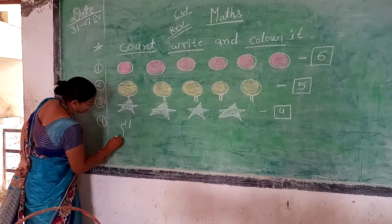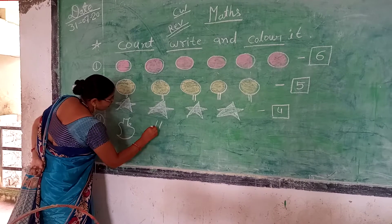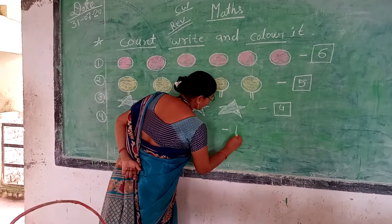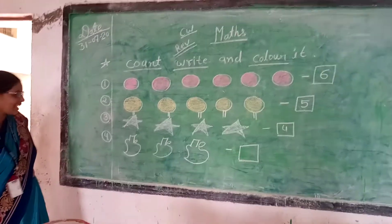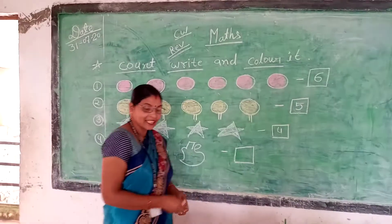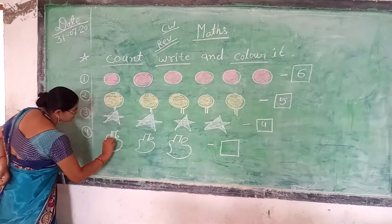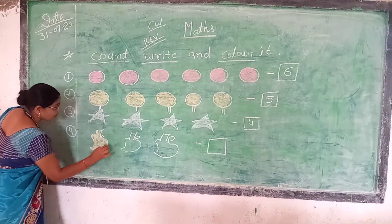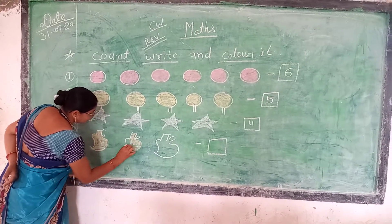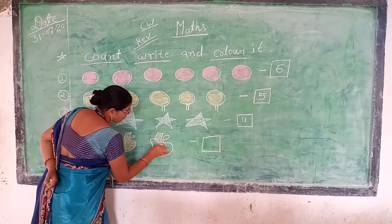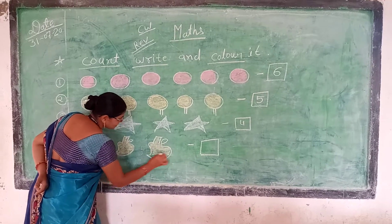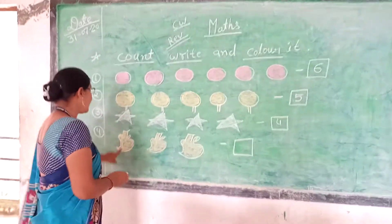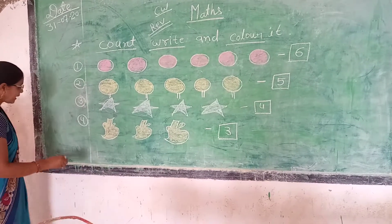Mango. Three. How many mangoes? One, two, three — three mangoes. Mango yellow color. Yes, this is mango yellow color. All of these mangoes will be colored. How many mangoes? One, two, three — three mangoes. And last, number five.